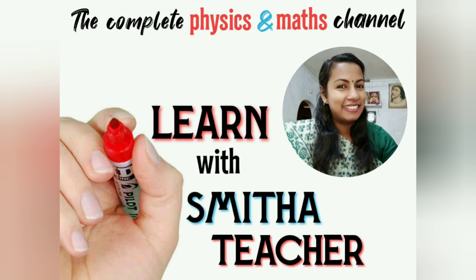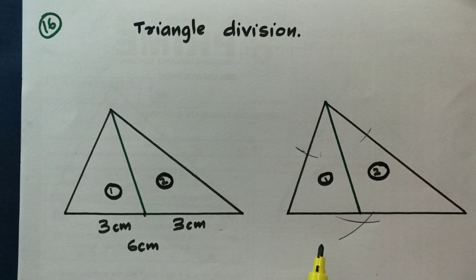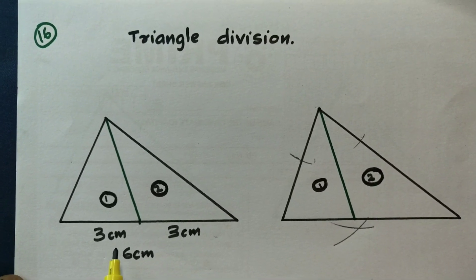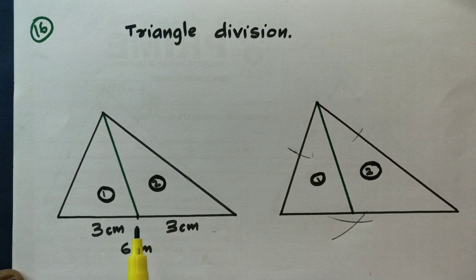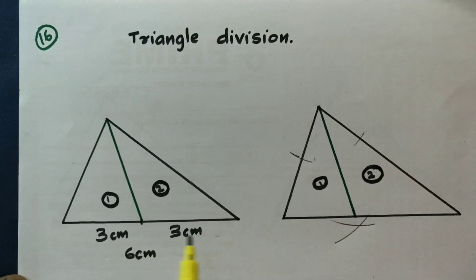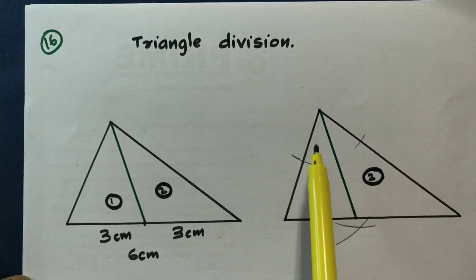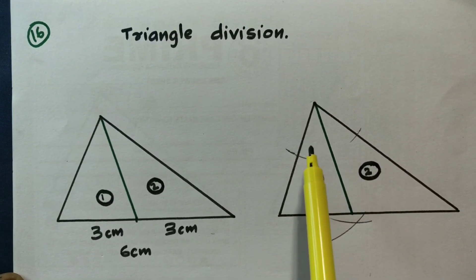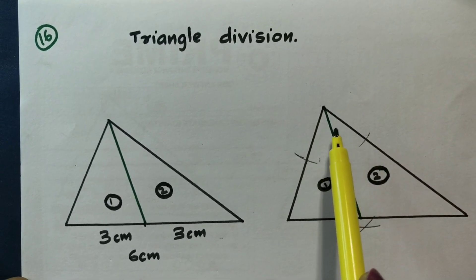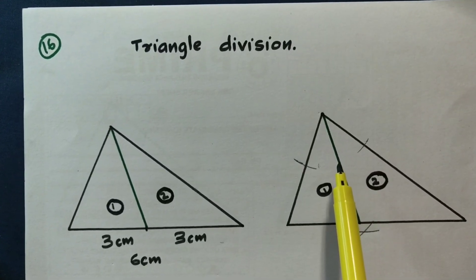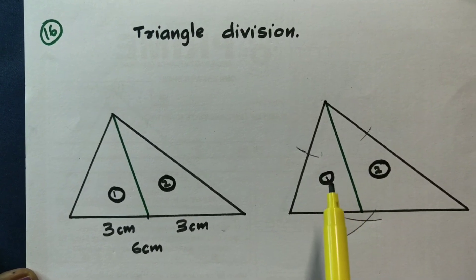Please subscribe to the channel. The triangle is divided into two rows. We will do the angle bisectors — there will be a lot of classes on this, and we will do each in the same tutorial.